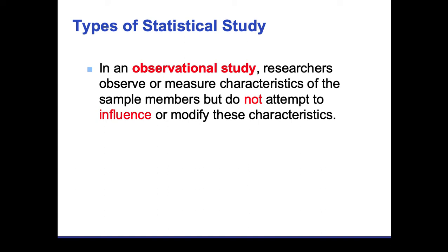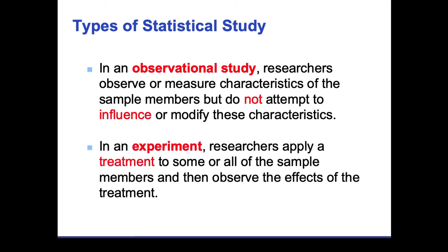One way to prevent bias is through an observational study. In a true observational study, researchers observe or measure characteristics of the sample members but do not attempt to influence or modify these characteristics. This is a pretty good study type because it also helps prevent pushing your own agenda into the study. An experiment, on the other hand, is where you actually apply a treatment to some or all sample members and then observe the effect — for example, the placebo effect.